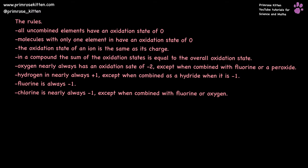All uncombined elements have an oxidation state of zero. So if something is on its own, it hasn't lost or gained any electrons, it's not forming a bond with something, it's not in a compound, it's going to have all the electrons it started with — its oxidation state is zero. Molecules with only one element also have an oxidation state of zero. While they may have lost or gained electrons, on average no one element within that compound can be said to have gained or lost more electrons than the other, so it is zero.